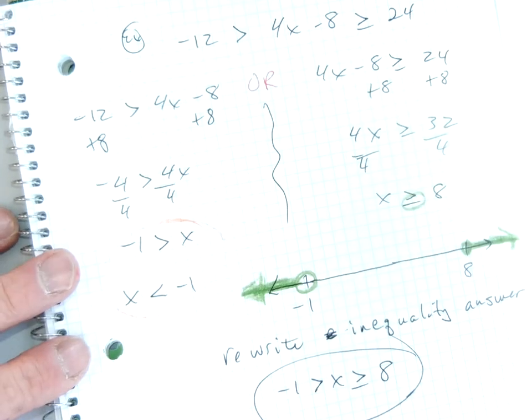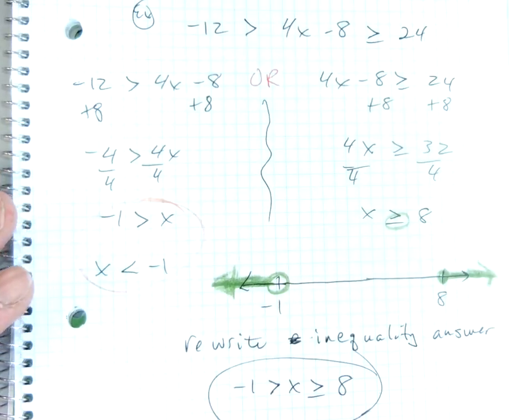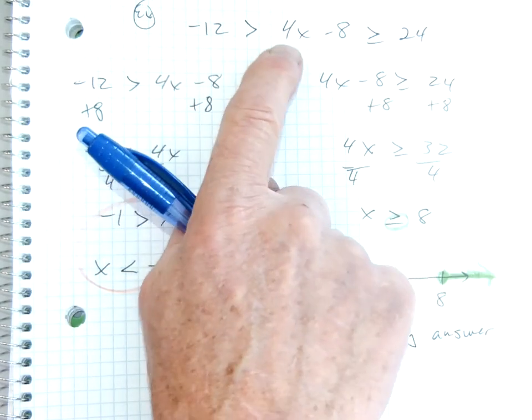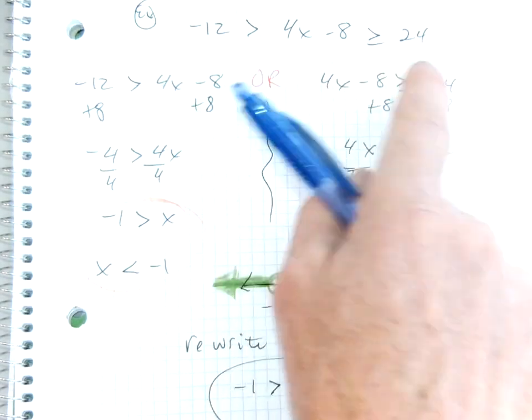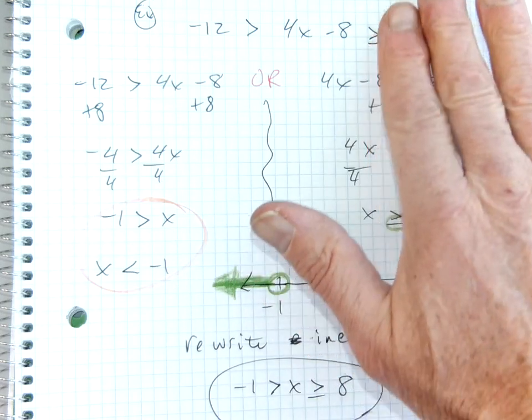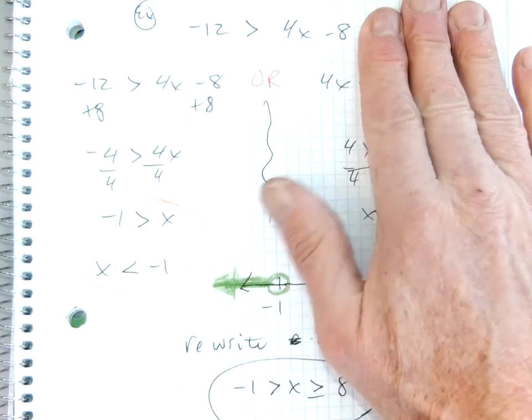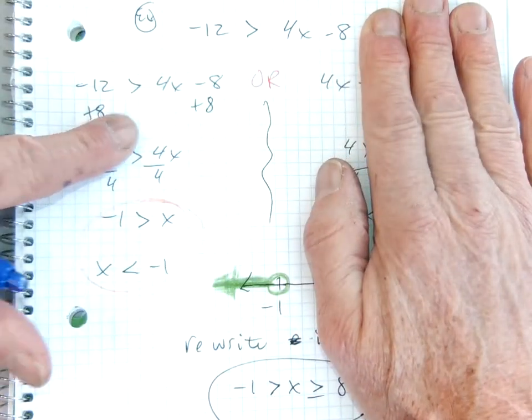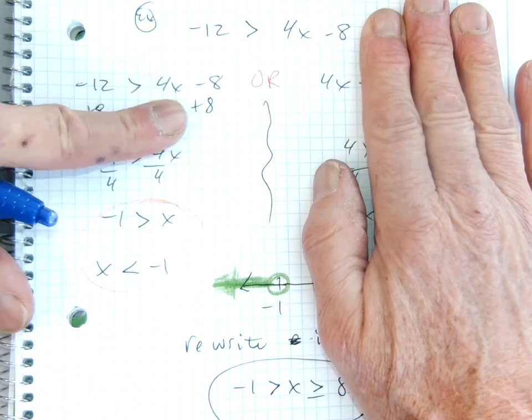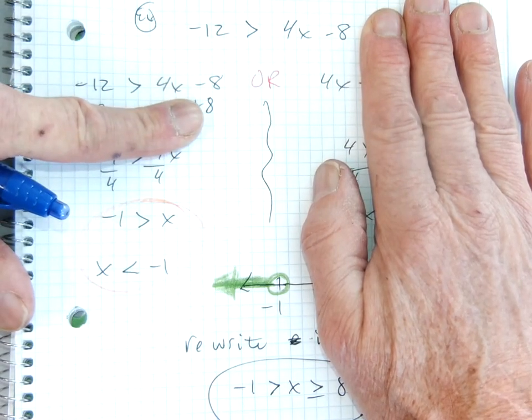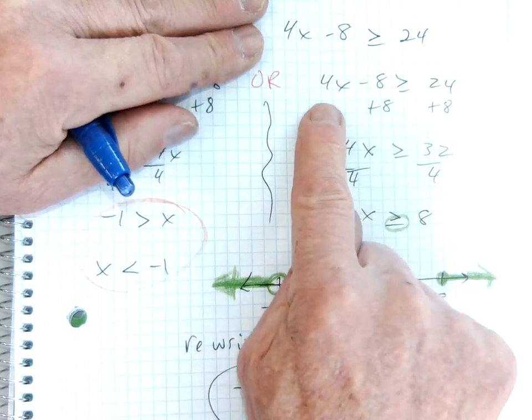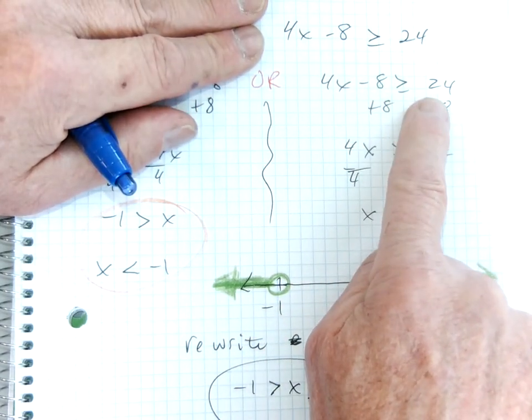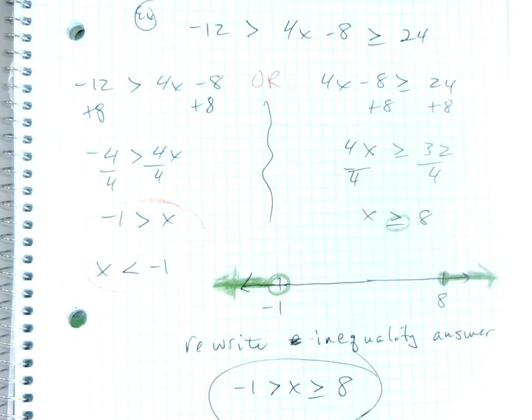Then we took a look at a second example. And we have negative 12 is greater than 4x minus 8, which is greater than or equal to 24. And again I see two different equations. Here's my first equation: negative 12 is greater than 4x minus 8. Or here's my second equation: 4x minus 8 is greater than or equal to 24. And I need to solve for both.